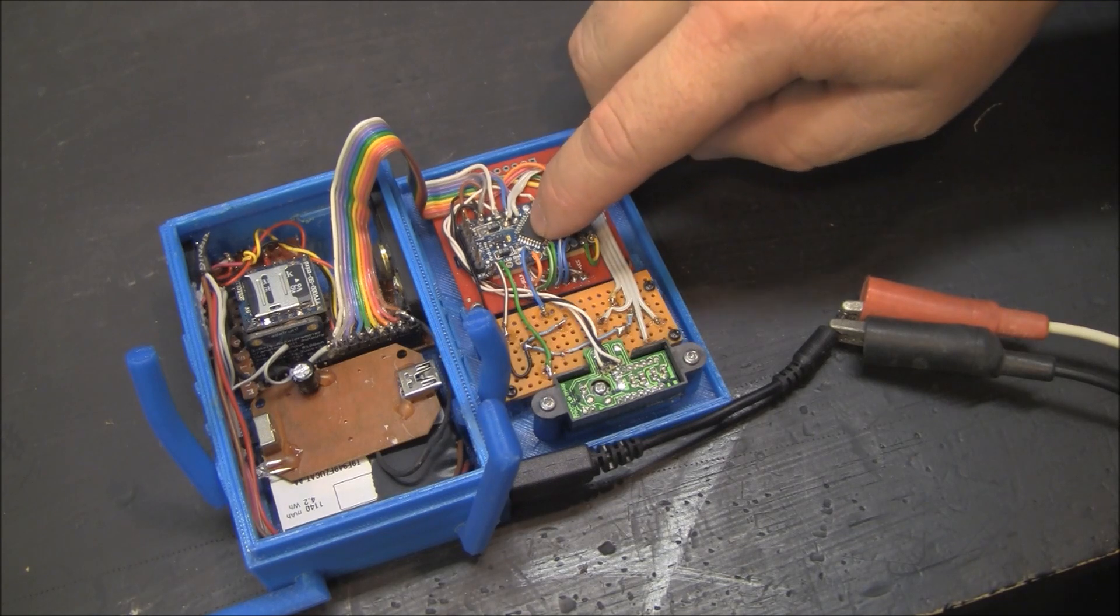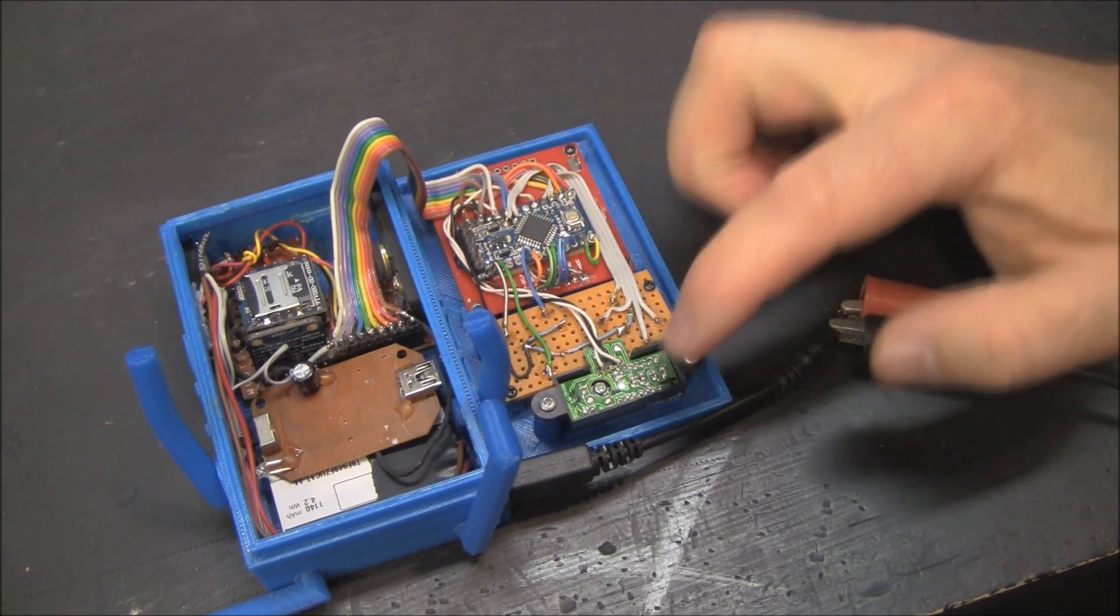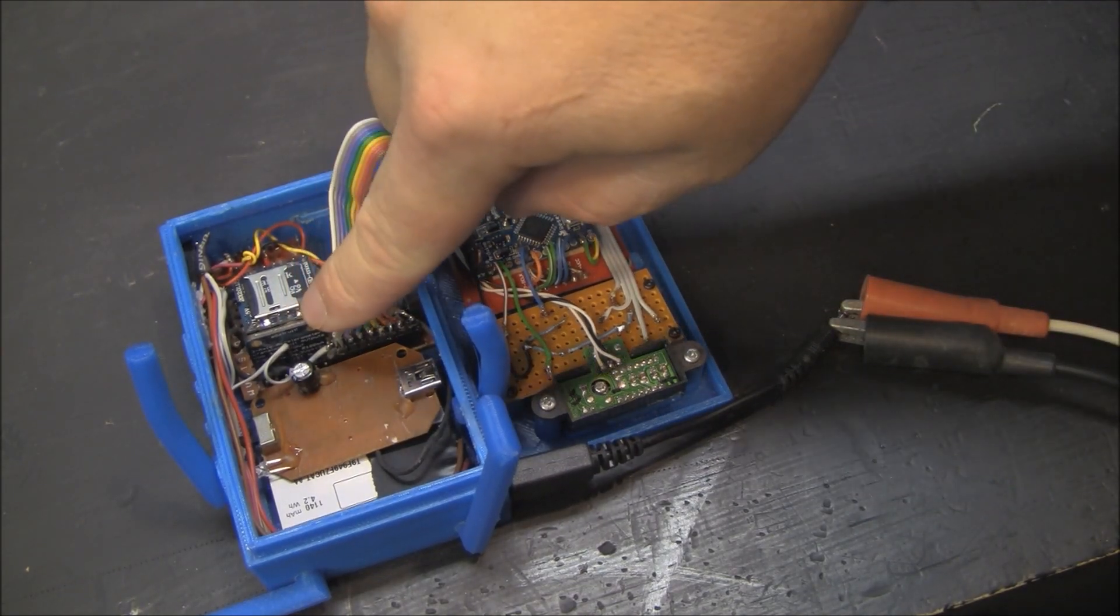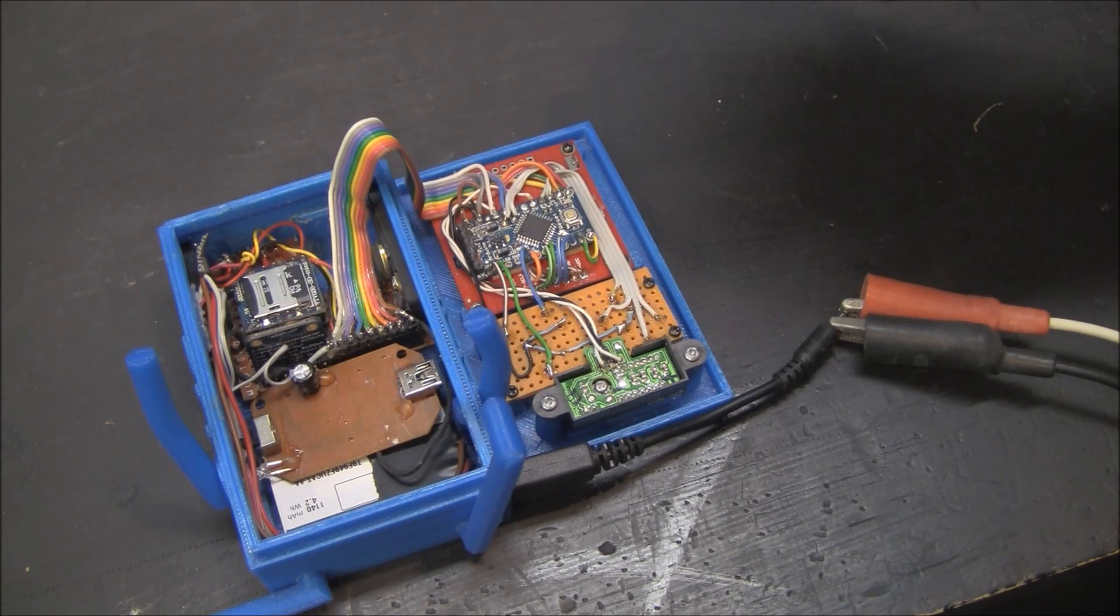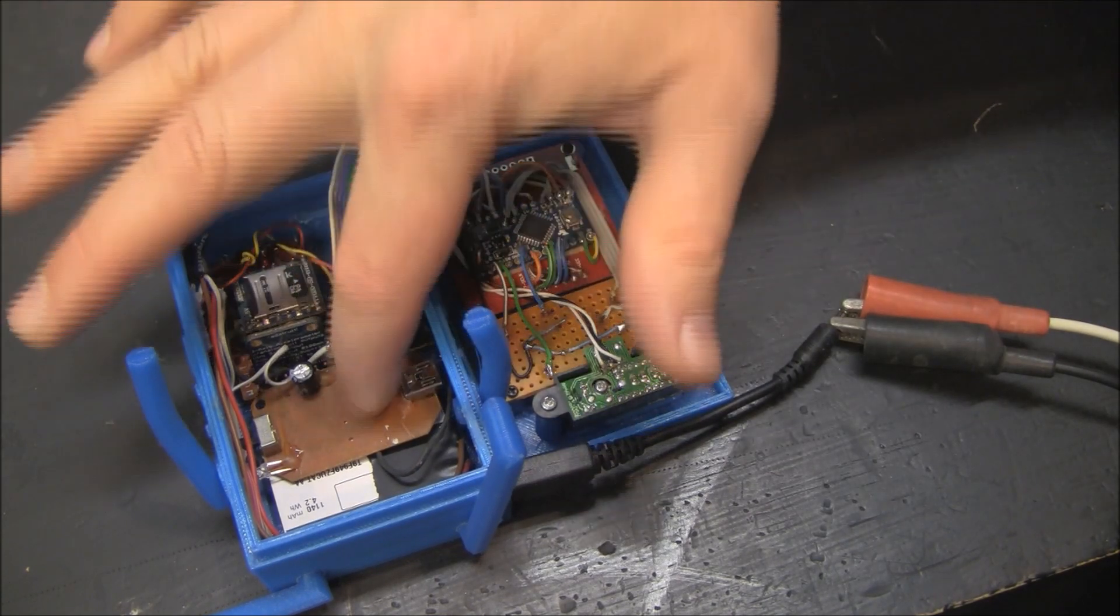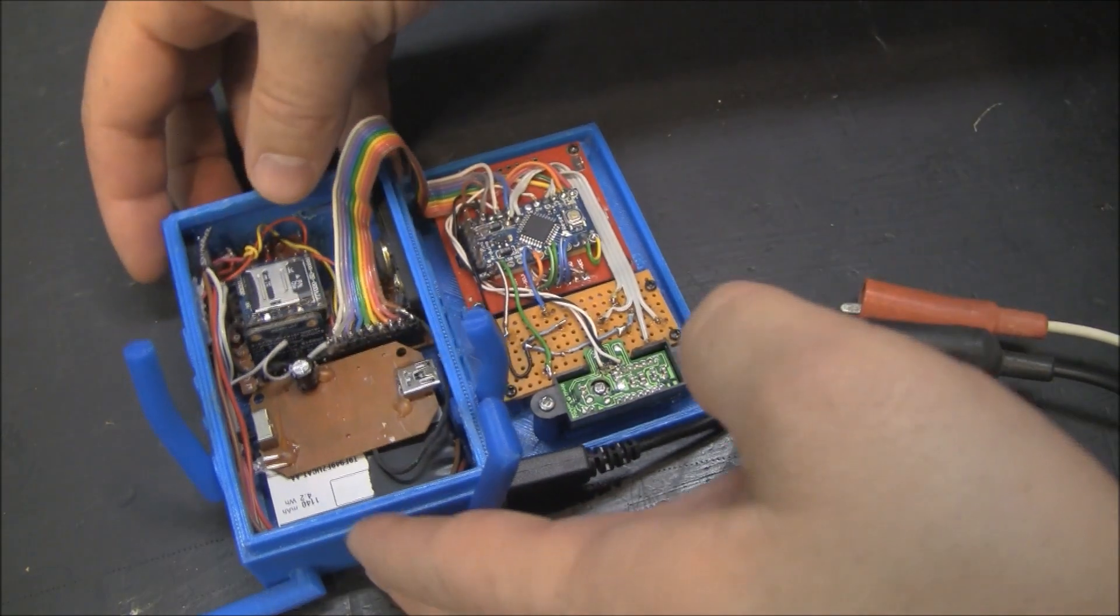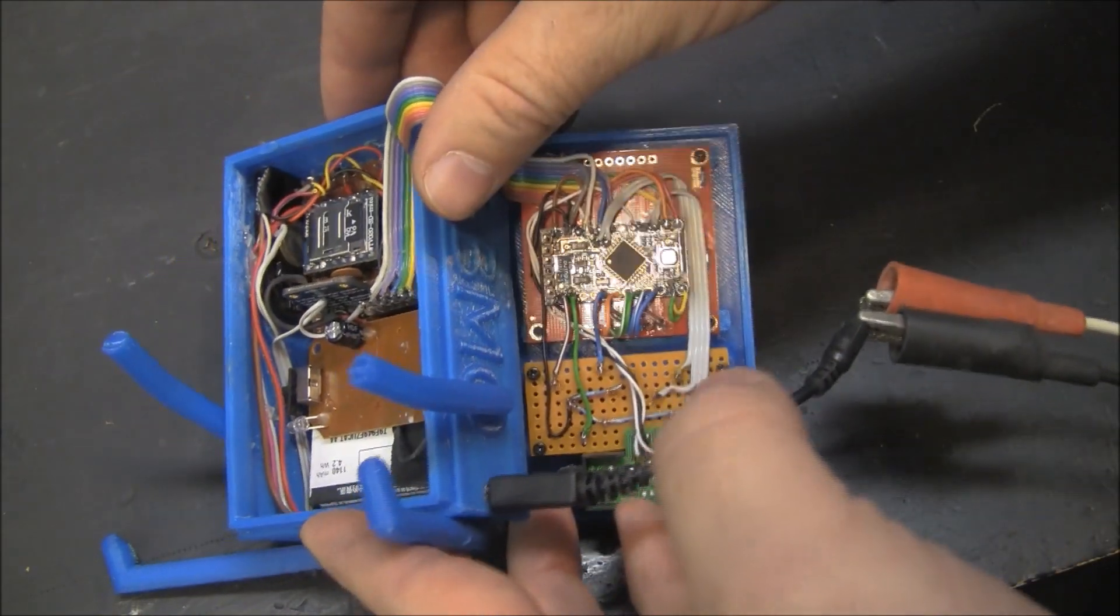So this is an Arduino Pro Mini made by SparkFun, Sharp Infrared Sensor, you've got an Adafruit Accelerometer Music Player, you just put an SD card in there. This is an amplifier and of course there's little speakers on each side.